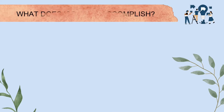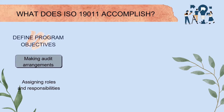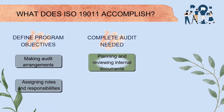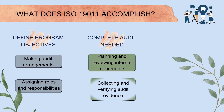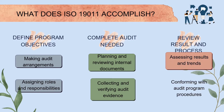What does ISO 19011 accomplish? First, defining program objectives — there are two objectives: to make audit arrangements and to assign roles and responsibilities. Second, to complete the audits needed, which is to plan and review internal documents and also to collect and verify audit evidence. Third, to review the results and process, which is to assess the results and trends, and also to confirm with audit program procedures.